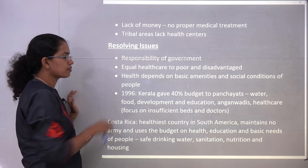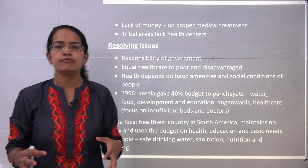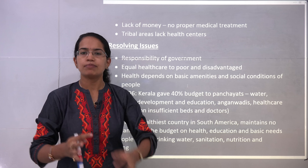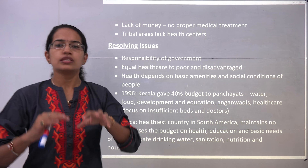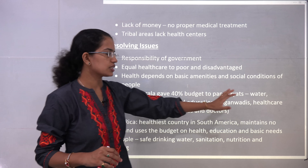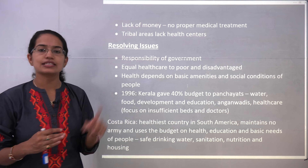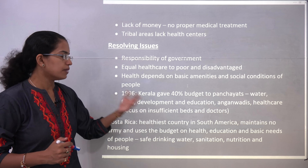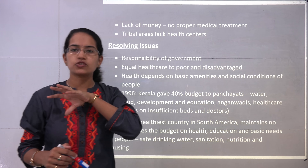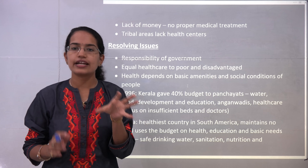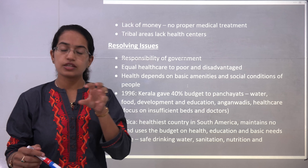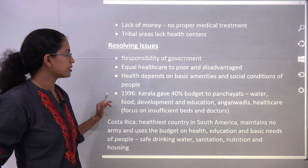One major example was from Kerala. In 1996, the Kerala government directed that 40% of the budget go to the panchayats, which were independent to manage their own budget. These panchayats spent the amount on various projects like water, food, development, education, Anganwadis, and healthcare. Ultimately, the scenario in rural areas improved at a much faster pace, because each panchayat focused on its individual area and could identify where there were insufficient beds or lack of doctors, resolving root problems.